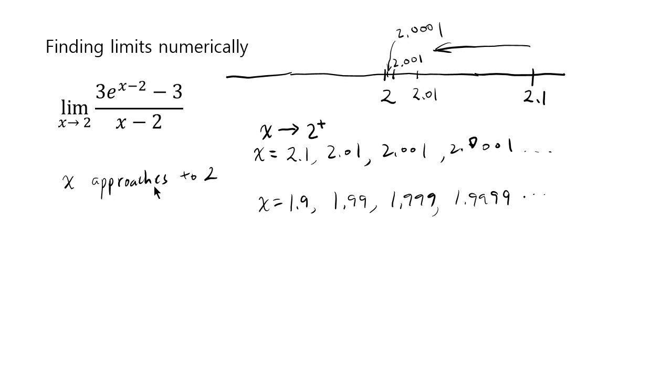You could also approach 2 from the left. You can start from 1.9. Then 1.99 will be somewhere here. 1.999 will be even closer. And then somewhere here will be 1.9999, and it will be really hard to distinguish from 2. And notationally, we write this as x goes to 2 minus, because all these numbers are slightly less than 2.